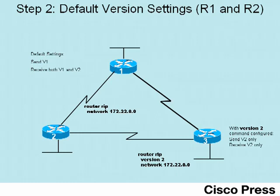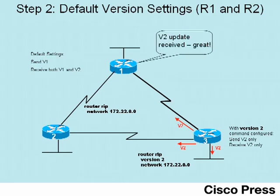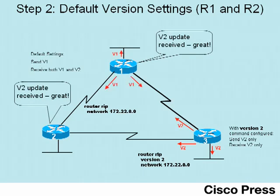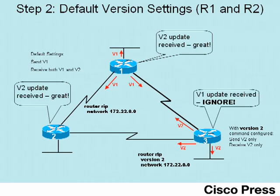In step 1, with R1 and R2 using default version settings and R3 configured for version 2, router 3 sends only version 2 updates. Since R1 and R2 are willing to receive version 2, they process those updates and learn routes. However, when R1 and R2 send version 1 updates, router 3 simply ignores them. So router 3 is not learning any routes from router 1 or router 2.